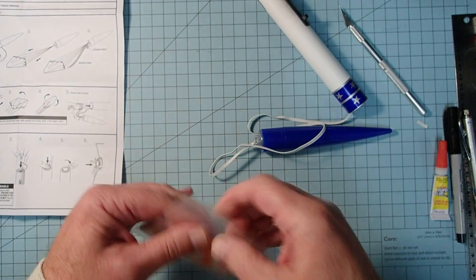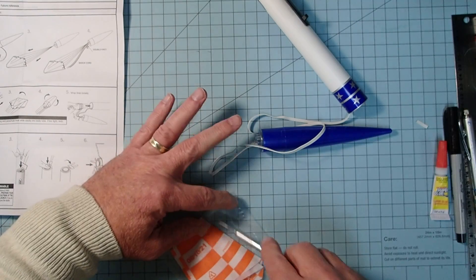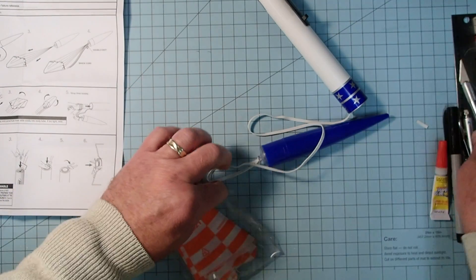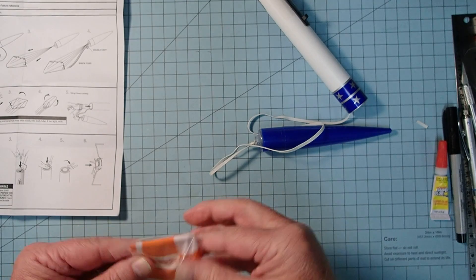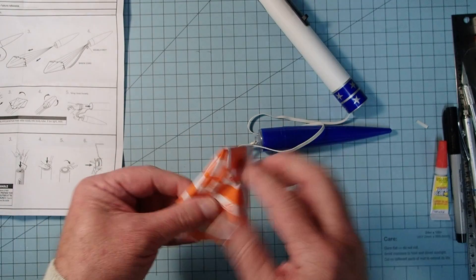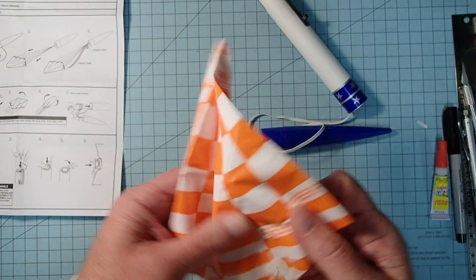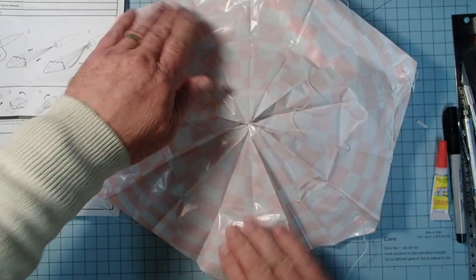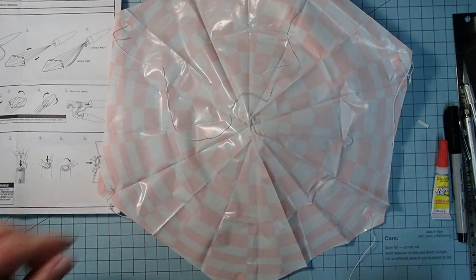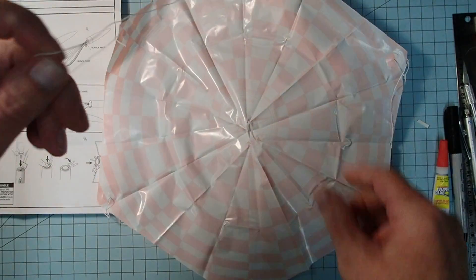All right, and then we do need to add the parachute. So go ahead and carefully open this up and then spread it out and then gather up the shroud lines.